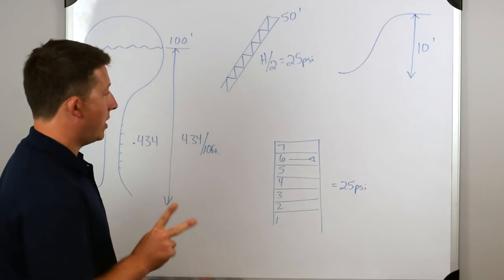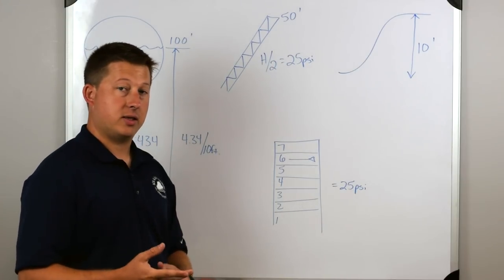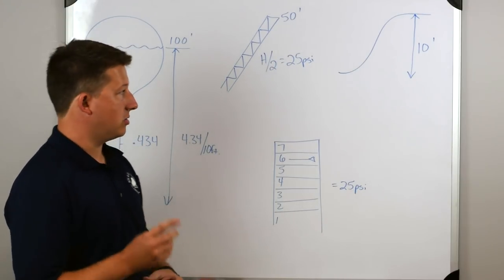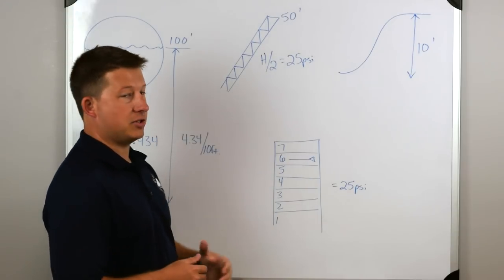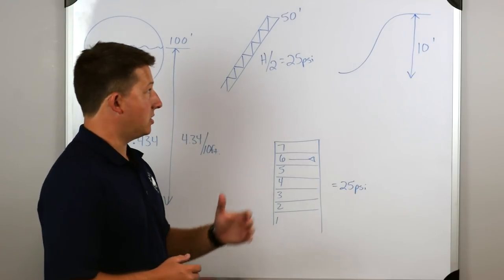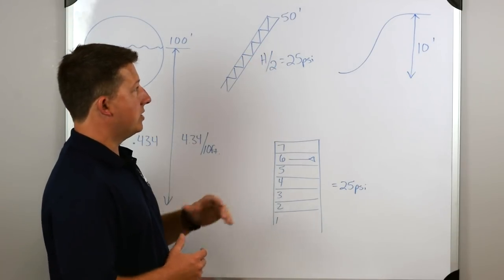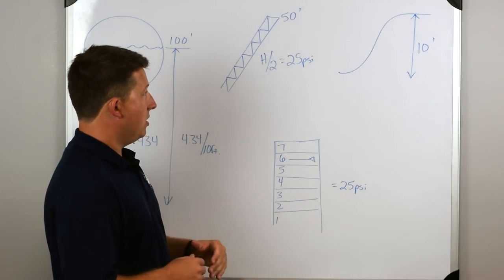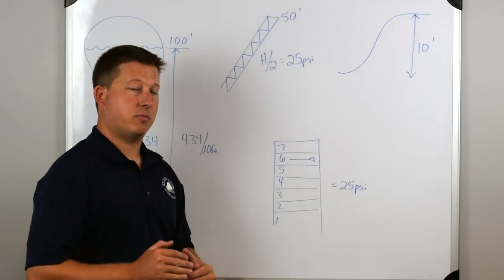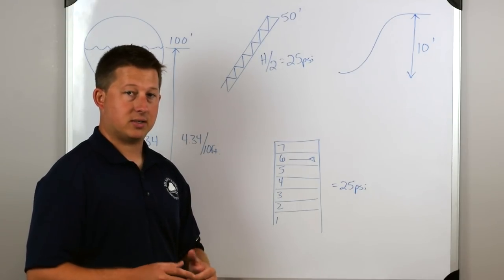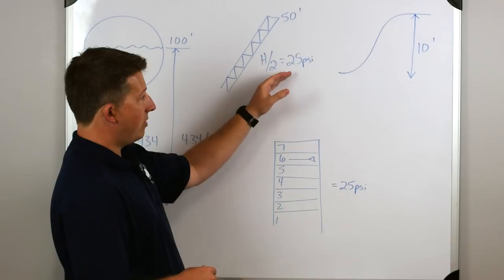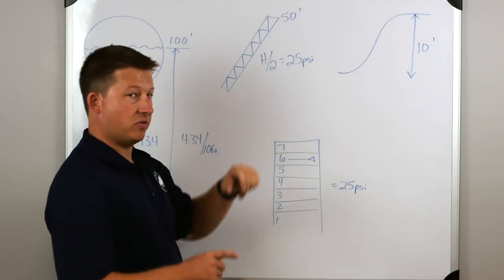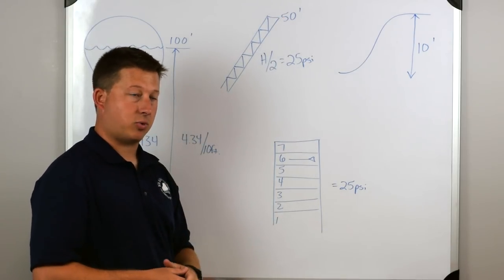So we're going to use two common formulas to calculate the elevation pressure gain or loss. The first one's going to be the height divided by 2. So the way that works is, as an example, you have an aerial device or a ladder truck that's 50 feet in the air flowing a nozzle from the tip of the aerial at 50 feet. All we do is take that height and divide it by 2, which is 25 PSI. So we need to add 25 PSI if that nozzle is 50 feet in the air for it to have the right nozzle pressure.